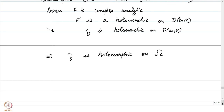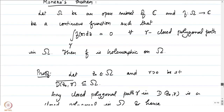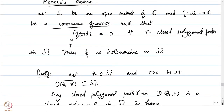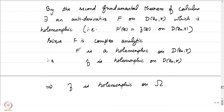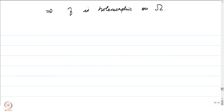So we started with just a continuous function f. The only regularity assumption was continuity. We used the fact that it has an antiderivative via the second fundamental theorem of calculus, and because the antiderivative is holomorphic — hence complex analytic — its derivative is also holomorphic. Morera's theorem is a standard tool for checking whether a given function is holomorphic.